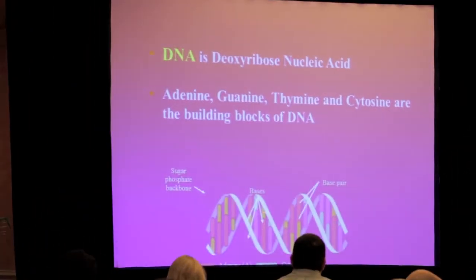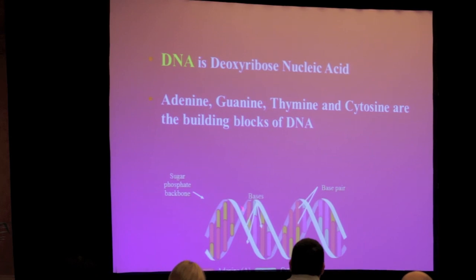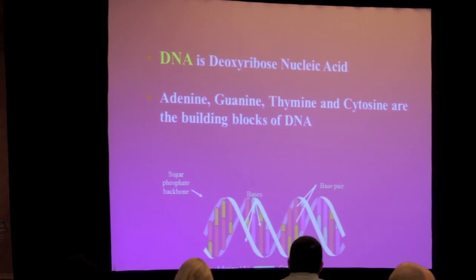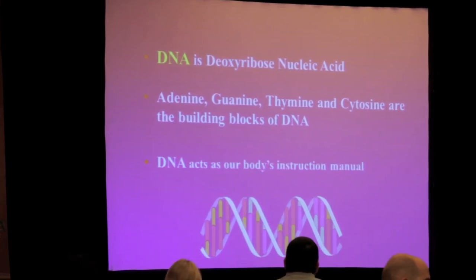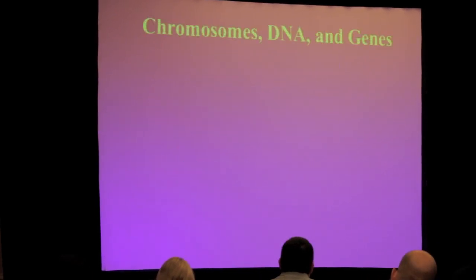The structure has four building blocks: adenine, which pairs with thymine, and guanine, which pairs with cytosine. You can see in this schematic these bases that pair with an assigned partner and a sugar phosphate backbone that surrounds it. This DNA acts as our body's instruction manual.